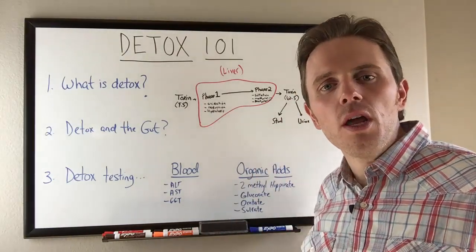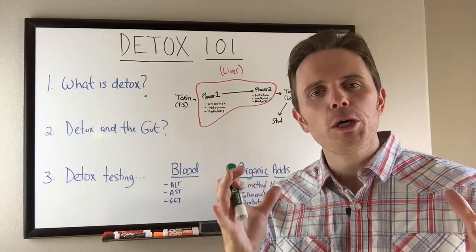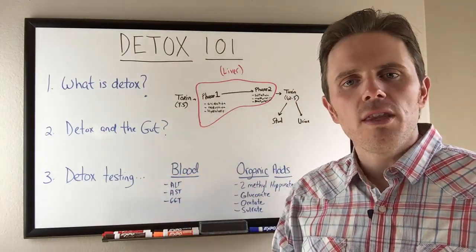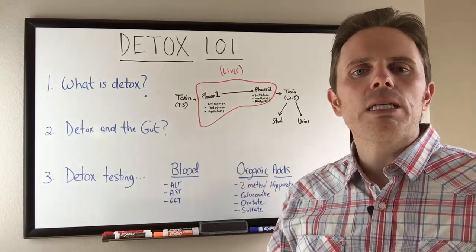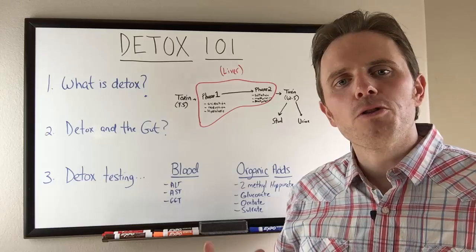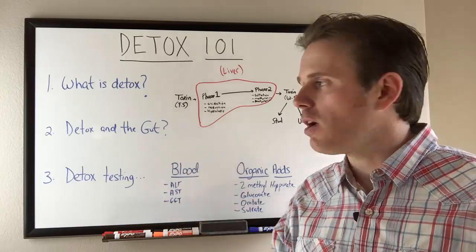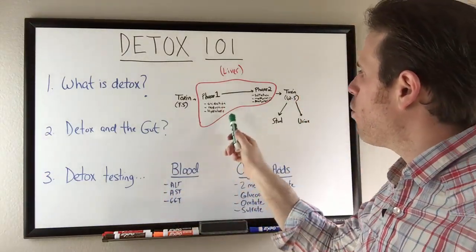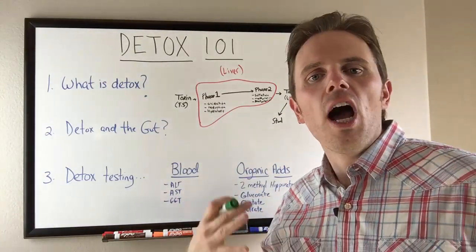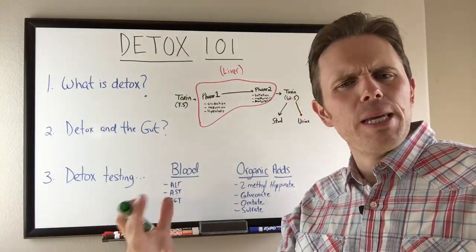What's happening in phase one? We're taking fat soluble toxins. FS for fat soluble. This could be bisphenol A. This could be various chemicals in the environment. We're taking these fat soluble toxins and we're turning them into water soluble toxins. So what's happening here is we're putting these toxins through various phases known as oxidation, reduction, hydrolysis, a few more but just to keep it really simple.